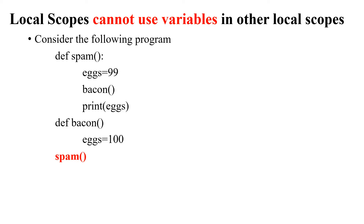I then call the function spam. The first line of execution is the call to spam. The program execution goes straight to the definition of spam, where x is assigned 99. Inside spam, I call the function bacon, so execution moves to bacon's definition where x is assigned 100. After that line executes, execution returns back to spam.